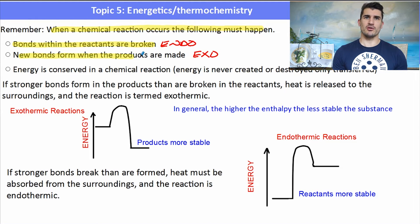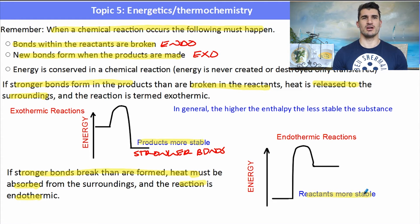Now if stronger bonds form in the products than are broken in the reactants, heat is released, and it's an exothermic reaction. Now for an exothermic reaction, the products are more stable. They have less energy. They have stronger bonds in the products. So more stable means stronger bonds. If we have an endothermic reaction, the reactants are more stable. There's stronger bonds in the reactants. An easy way to remember this is like giving a kid red cordial. If he's got lots and lots of energy, he's unstable. He's got weaker bonds. Same kind of idea.